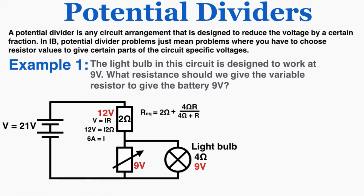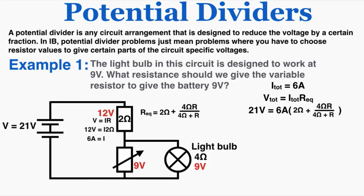That means the total current in the circuit is 6 amps, because it hasn't been split yet when it gets to the 2 ohm resistor. I can now make a connection between the equivalent resistance, total current, and total voltage — I know all of these. Plugging these in, I now have an equation with just one variable, R, so I can solve for it — which is the goal of this problem.